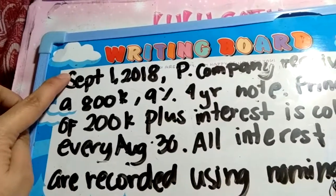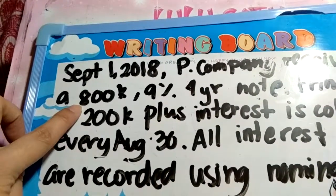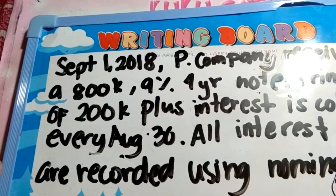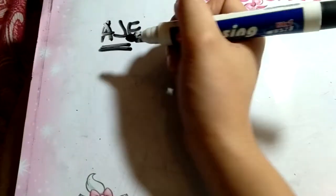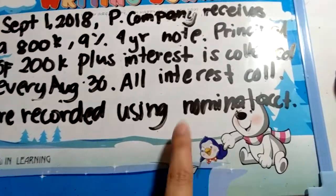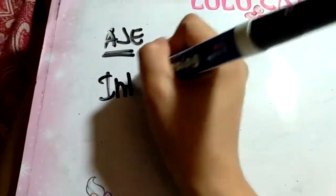So again, September 1 — the principal is 800,000 at 9%. The adjusting entries at the end of the month: what he credits is a nominal account. Because when he receives cash for interest, it is debited to interest receivable and then credited to interest income.